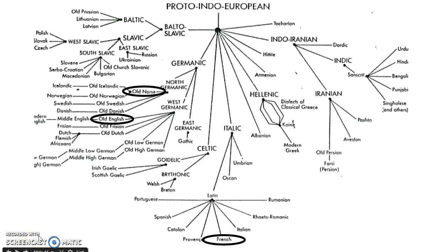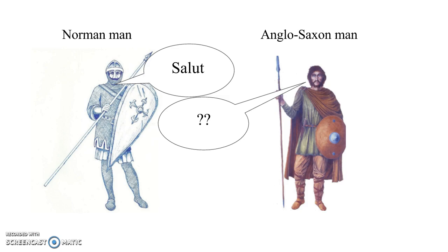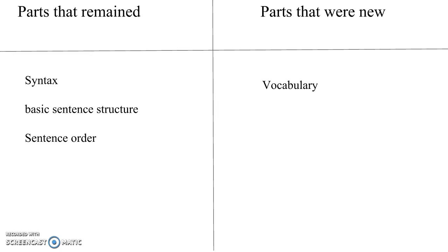When the Vikings conquered England, their language was Germanic, giving it many similarities with the Old English that the Anglo-Saxons spoke. The Norman French, on the other hand, is a Romance language, which meant it had relatively few words in common with their Germanic counterparts. So when the Normans conquered England in 1066, neither party could understand each other. Over time, the Anglo-Saxons borrowed Norman French vocabulary while keeping the Anglo-Saxon basic structure.